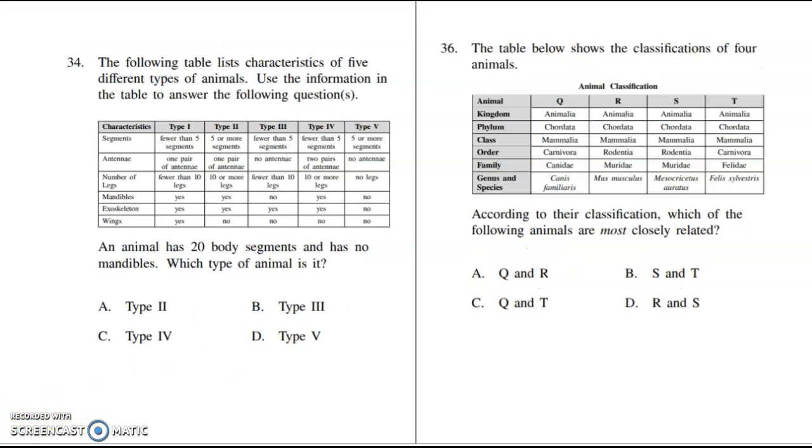Number 36, the table below shows the classification of four animals. According to their classification, which of the following animals are most closely related? They all start out the same - animalia, chordata, mammalia. So up to that point they're all the same. These two are still related at carnivora and these two in the middle are still related. Canidae or Felidae - canines or felines - they branch off there. These two are still together at family. They're both in the family Muridae, so R and S would be more closely related. D is the correct answer.